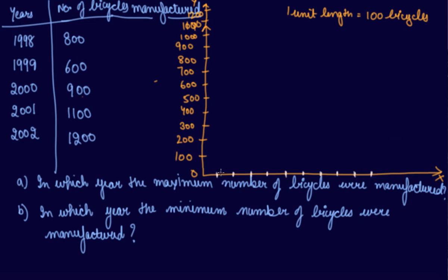In 1998, 800 bicycles were manufactured. So 800 bicycles were manufactured in 1998. In 1999, 600 bicycles, in front of 600, draw the graph. Straight lines and everything should be straight. 600 bicycles were, in this 800 bicycles were produced, in this 600 bicycles were produced in 1999.